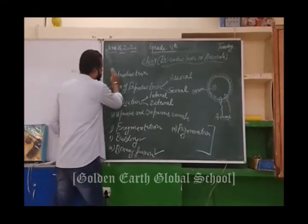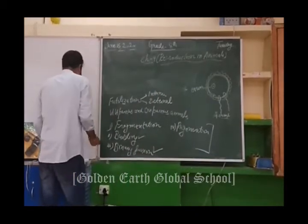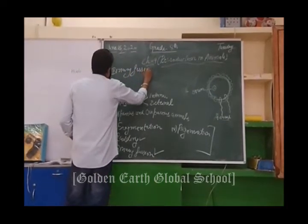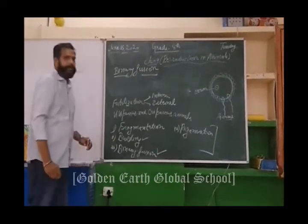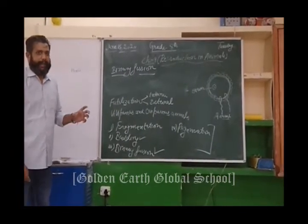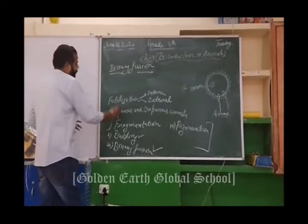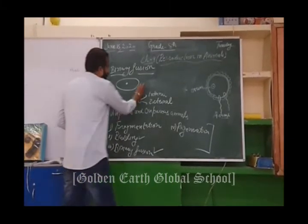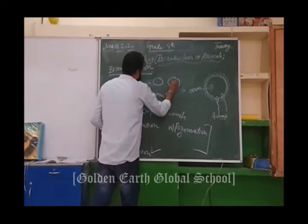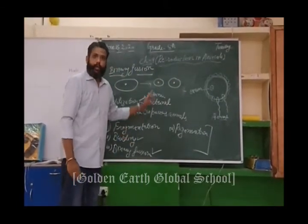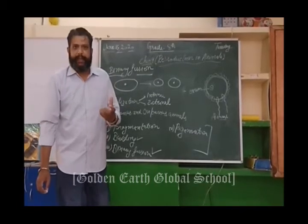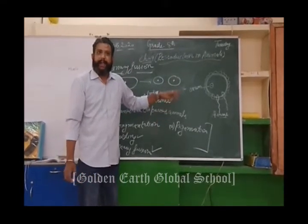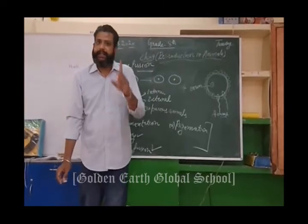Now let's start with the topic of binary fission. Binary fission is a process in which a body is split into two parts and they will produce the same image. There is a single small organism, and with the passage of time it splits into two parts. Fission means splitting. This results in the reproduction of two same individuals from their parent, and this is done under the category of asexual reproduction.